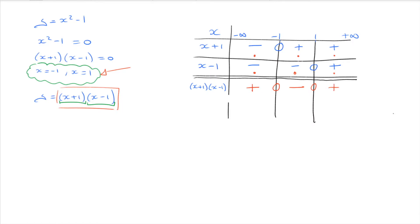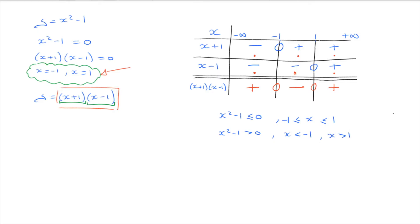Using this sign table, we can state that x squared minus 1 is less than or equal to zero if x is between negative 1 (included) and 1 (included). Or, if we need to solve x squared minus 1 greater than zero, we can see this is positive as soon as x is either less than negative 1 or x is greater than 1. That's how we make and use a sign table.